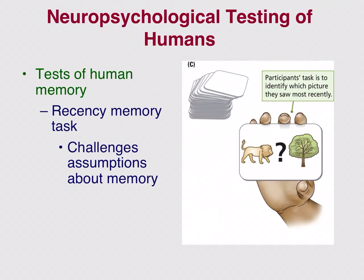Another task is the recency memory task, which tests whether you remember something you just saw — capitalizing on the recency effect. In memory, we have the primacy effect (remembering things from the beginning) and the recency effect (remembering the most recent thing). In this task, you might be asked: did you last see a lion or a tree? If you say 'tree,' that tests your ability to recall very recent stimuli.